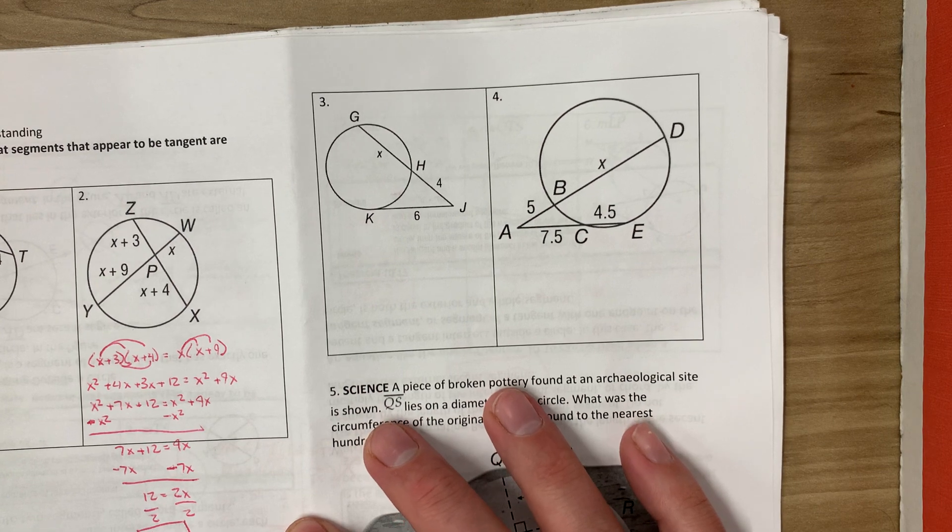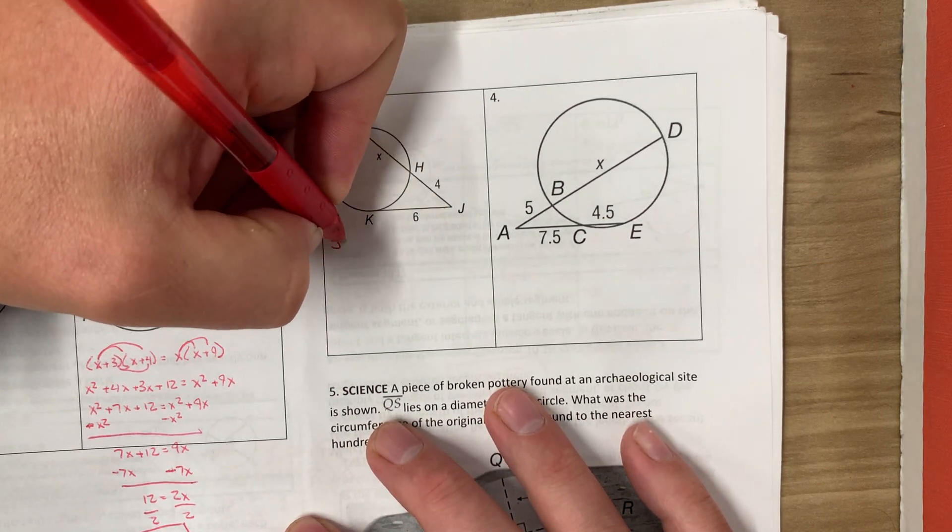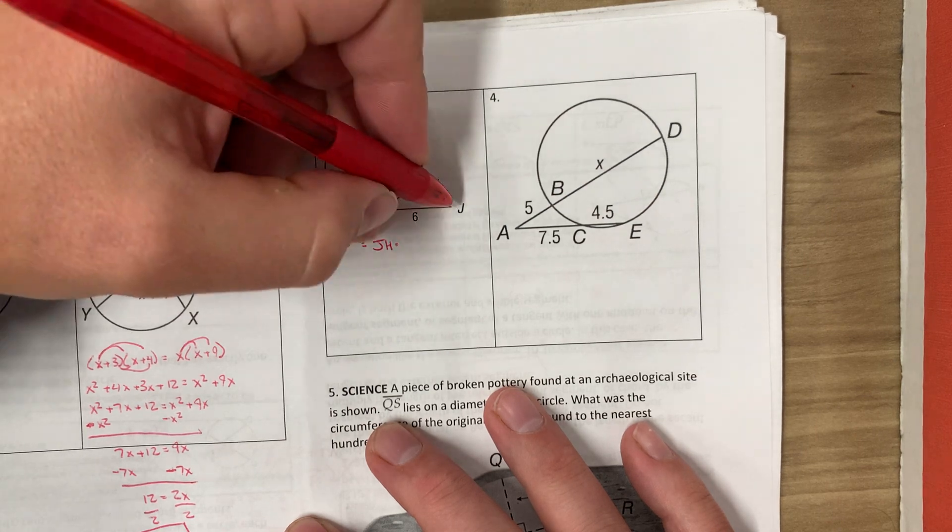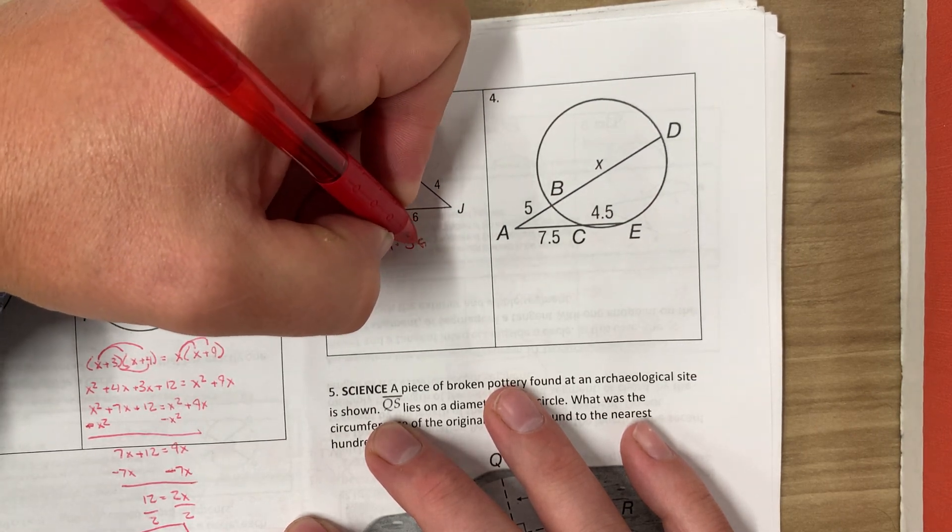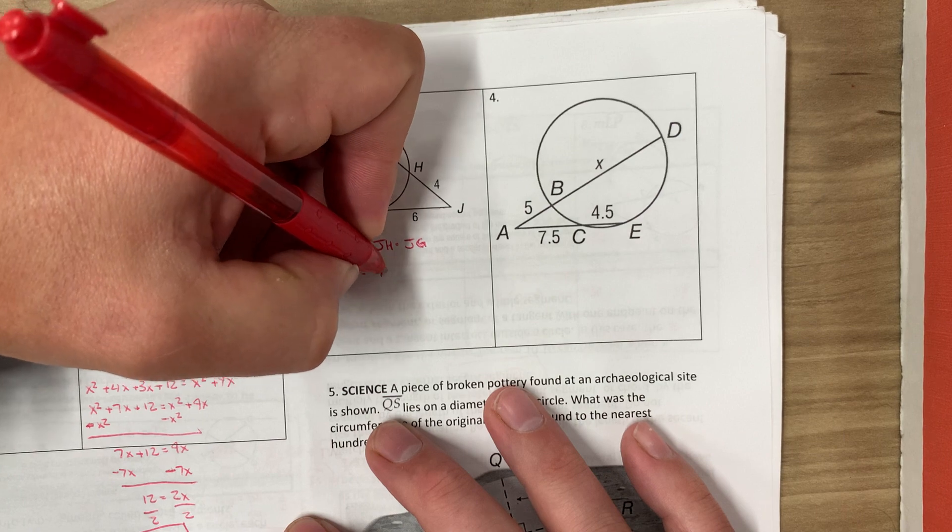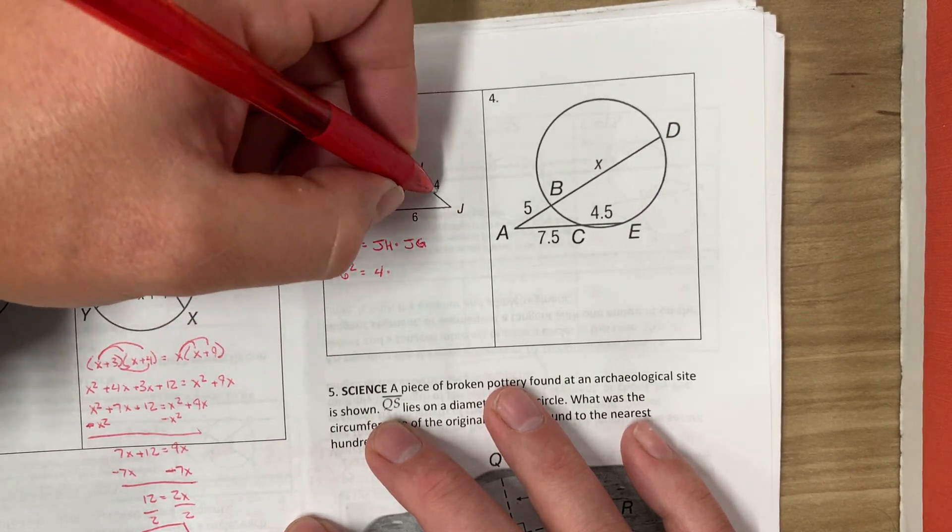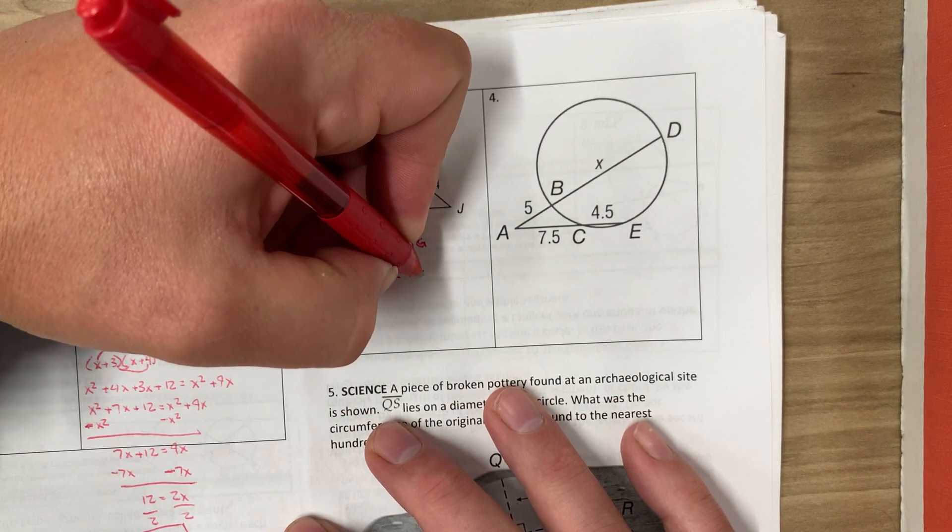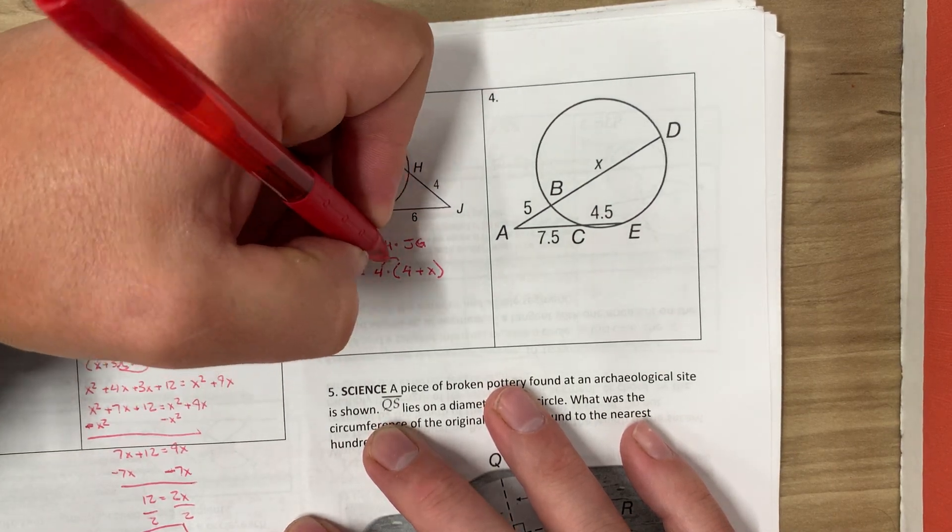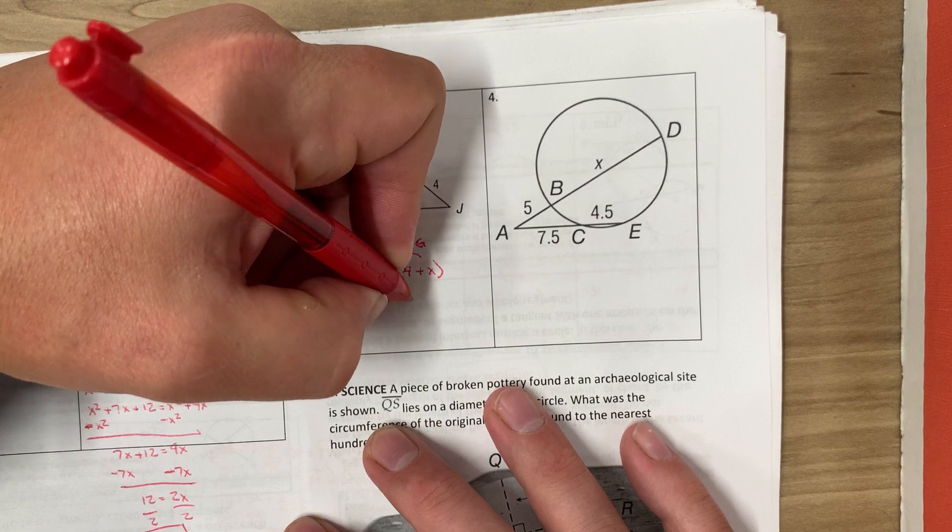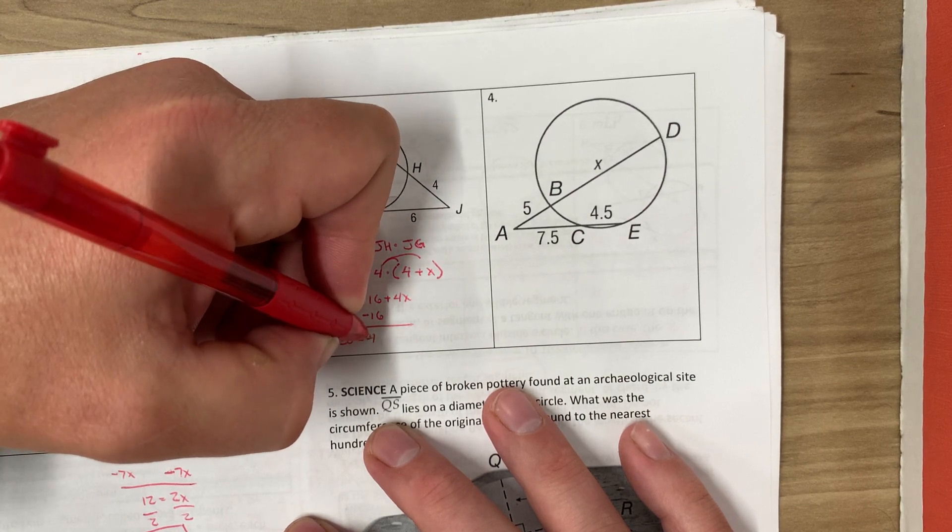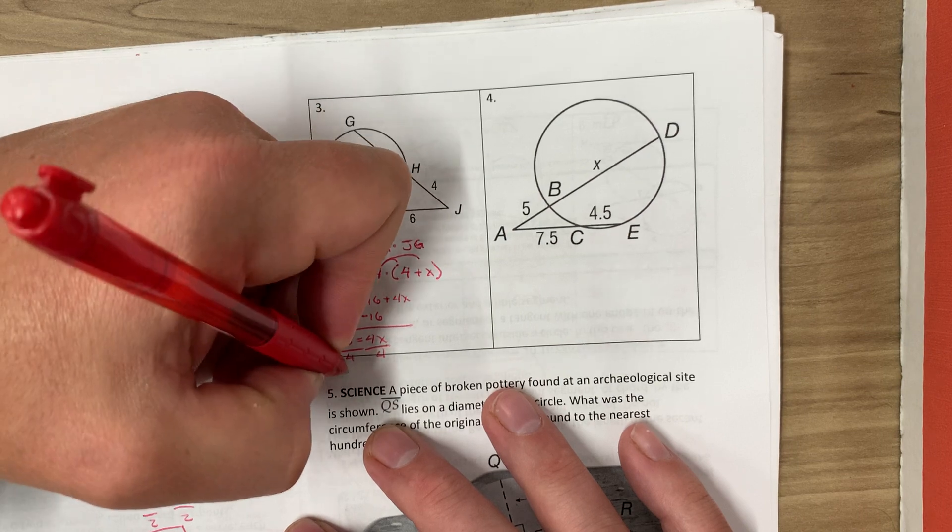Number 3. This is going to be one of those tangent ones. So we're going to do JK squared. So we got 6 squared will equal JH, the external, times JG, times the whole thing. JK squared, so we got 6 squared will equal, JH is 4, JG is 4 plus X. So when we simplify, we get 36 equals, and we distribute our 4, 16 plus 4X. I subtract 16 from both sides. I get 20 equals 4X. Divide by 4. X equals 5.